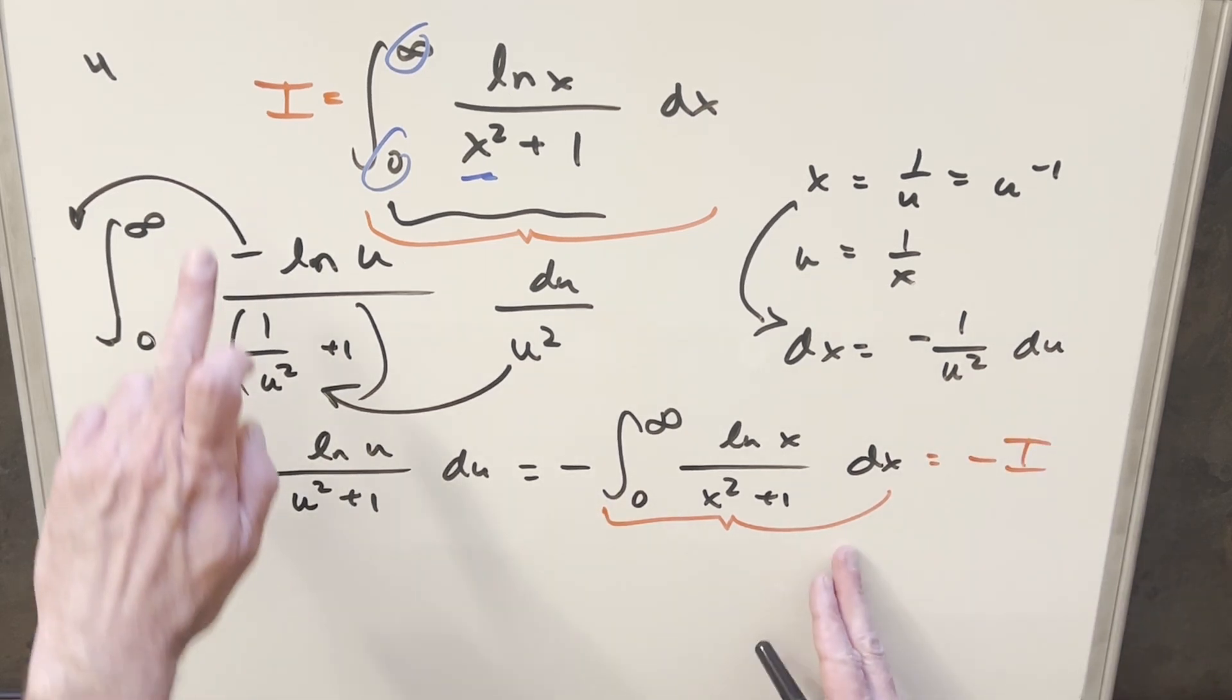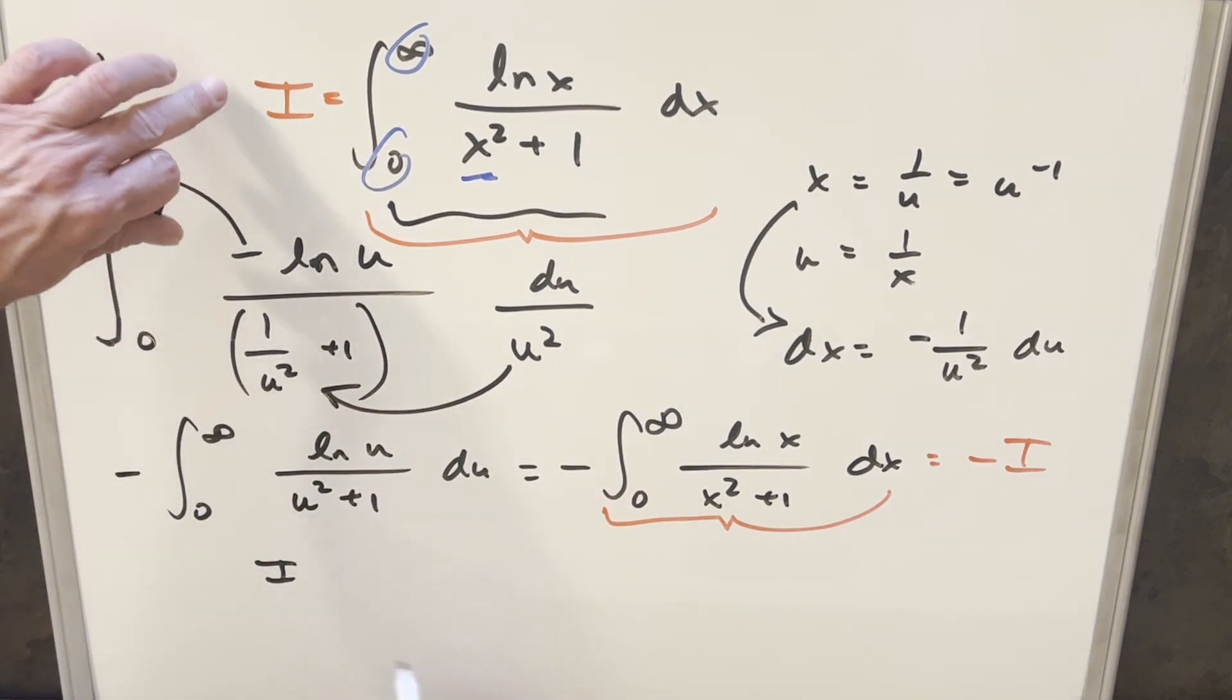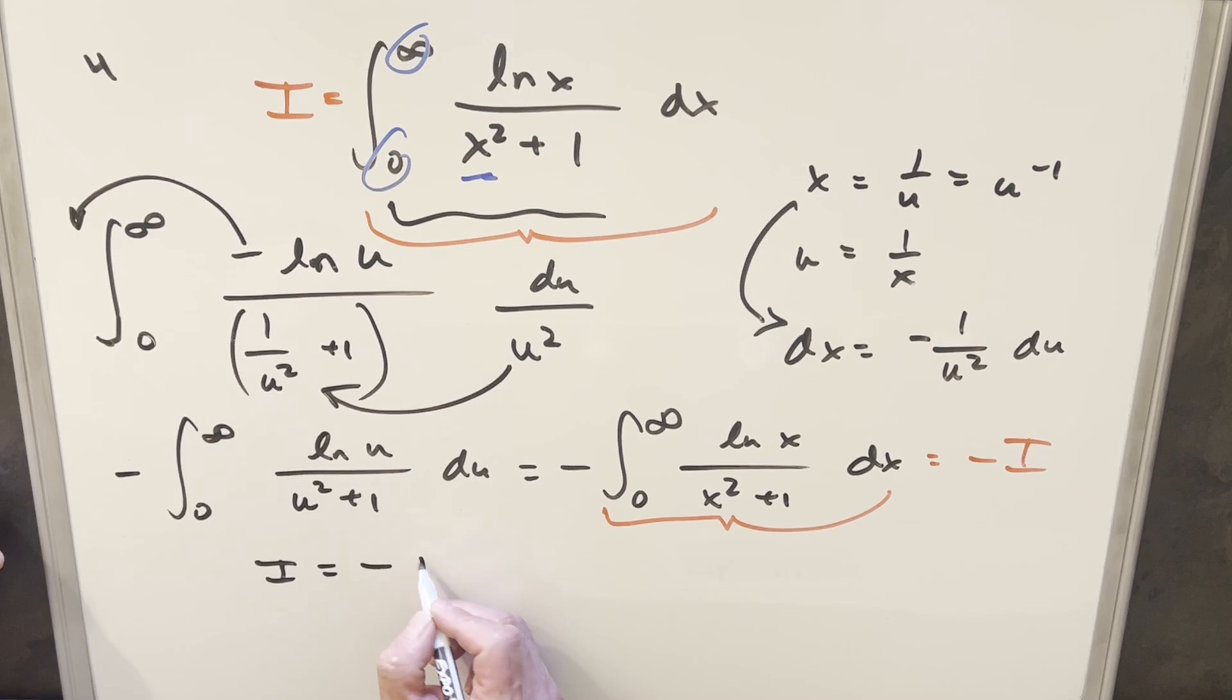But then with this being the case, we can set up a little equation and we can say that, because this is all equal, we just transformed it, so we're saying I needs to be equal to minus I. Well, let's just add an I on both sides like this. On the right side, it's going to cancel to zero.